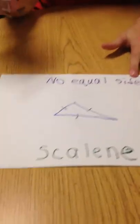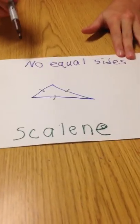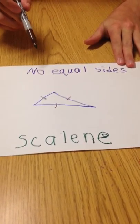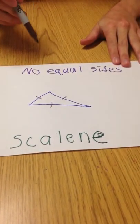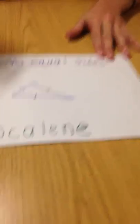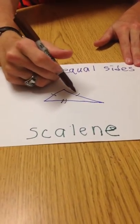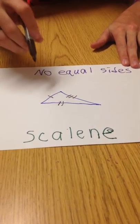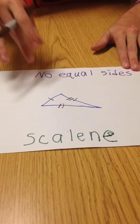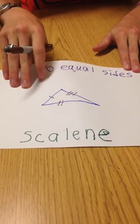The third type of triangle is the scalene triangle. With this triangle, no sides are equal, so you are going to put different hash marks to represent that those sides are all different.